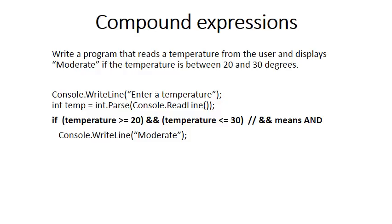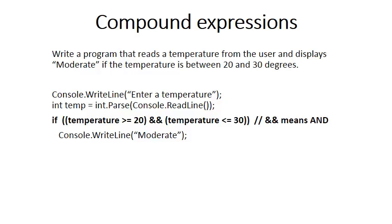But there's still something wrong in this if statement. Remember when we started with the if statement we said the condition must be in brackets. We have the two separate conditions in brackets, but the total compound condition needs to be in brackets as well. So the valid syntax has the compound condition — temperature >= 20 && temperature <= 30 — all of that in brackets.